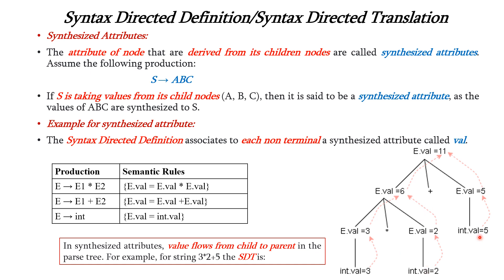Now let us see how the value is flowing from child to parent. According to rule number 3, the integer is assigned to the parent E dot val. The value 3 passes to its parent E dot val, and similarly the number 2 passes to its parent E dot val. This is multiplication, so according to rule number 1 we multiply 3 with 2 and store the result in its parent E dot val. Then 5 is passed to its parent according to rule number 3. Next is addition, so according to rule number 2 we add 6 and 5 to get 11, stored in its parent. This is the concept of synthesized attribute — values flow from child to parent.